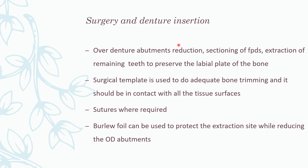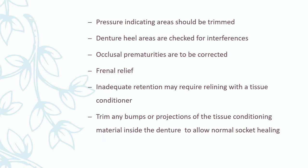For surgery and denture insertion: overdenture abutment reductions can be done, sectioning of FPDs, and extraction of remaining teeth while preserving the labial plate of bone. The surgical template is used to guide adequate bone trimming and should be in contact with all tissue surfaces. Sutures are placed where required. Foil can be used to protect the extraction site while reducing the denture abutment.